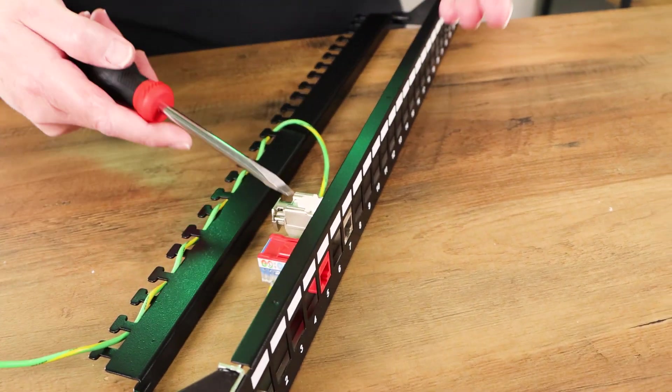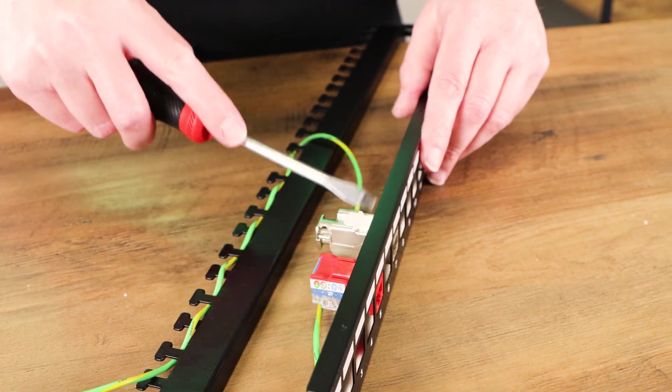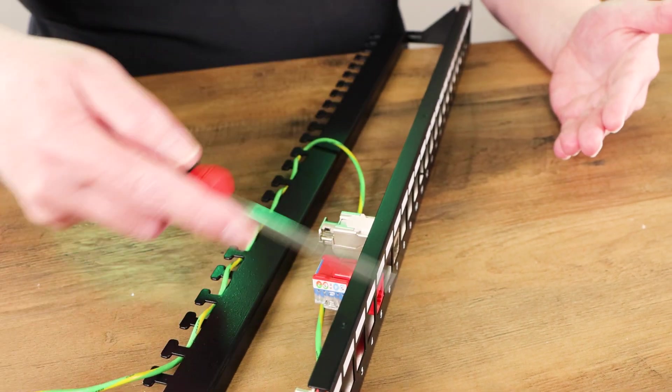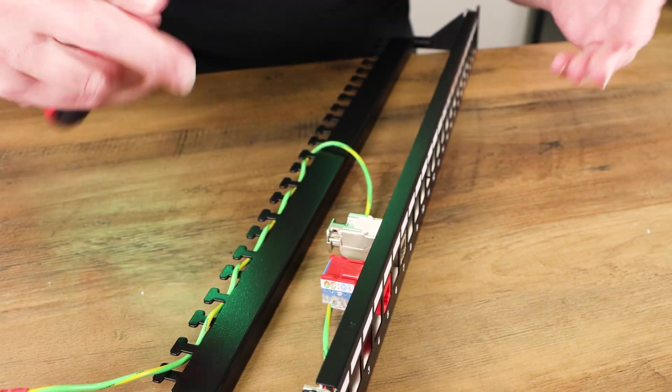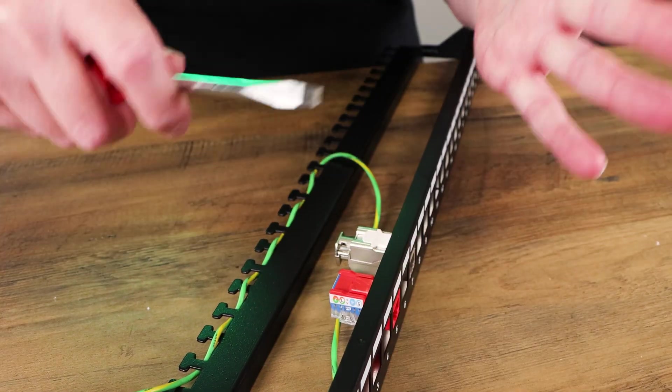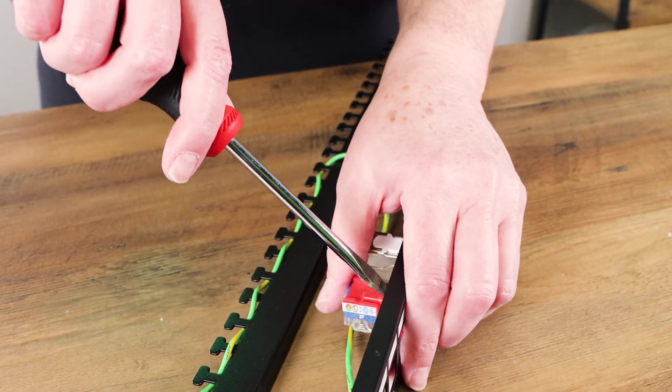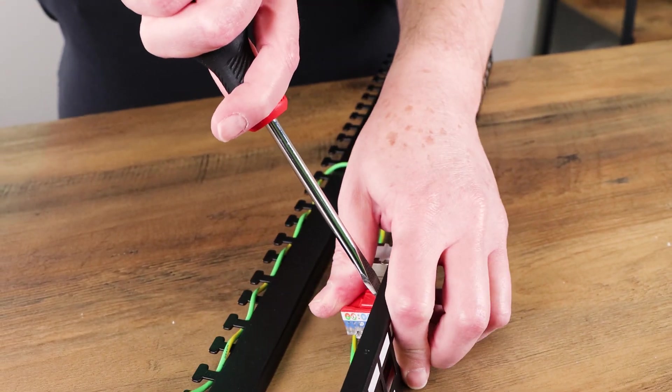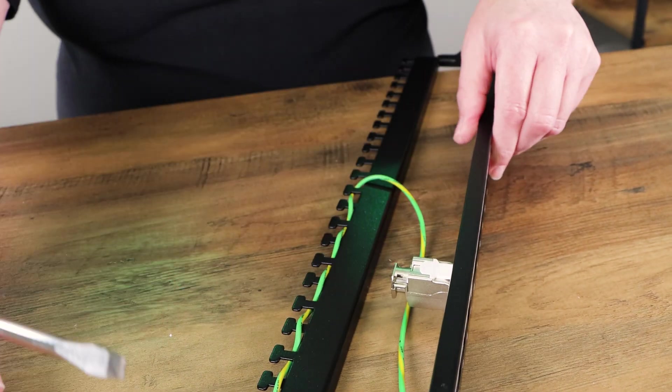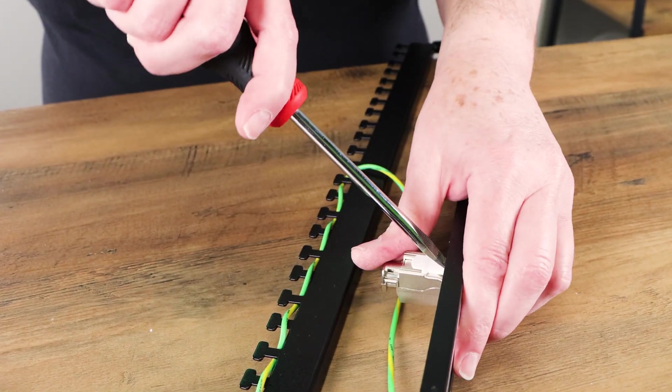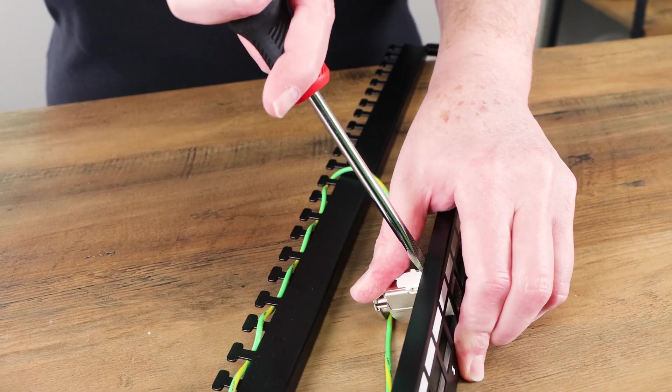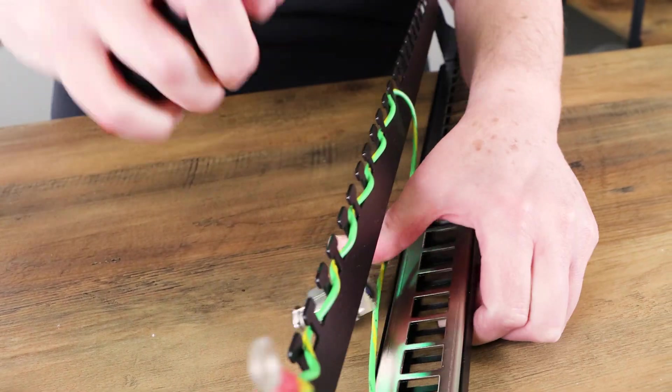So the removal procedure is even more straightforward when it comes to a 24-port straight-across tool-less patch panel. You're just simply depressing the top tab. Again, be careful with your hands. You're depressing the top tab, and you're going to hinge down. And that came out a lot easier. And the shielded one, same thing. You press the top tab and hinge down. There we go.